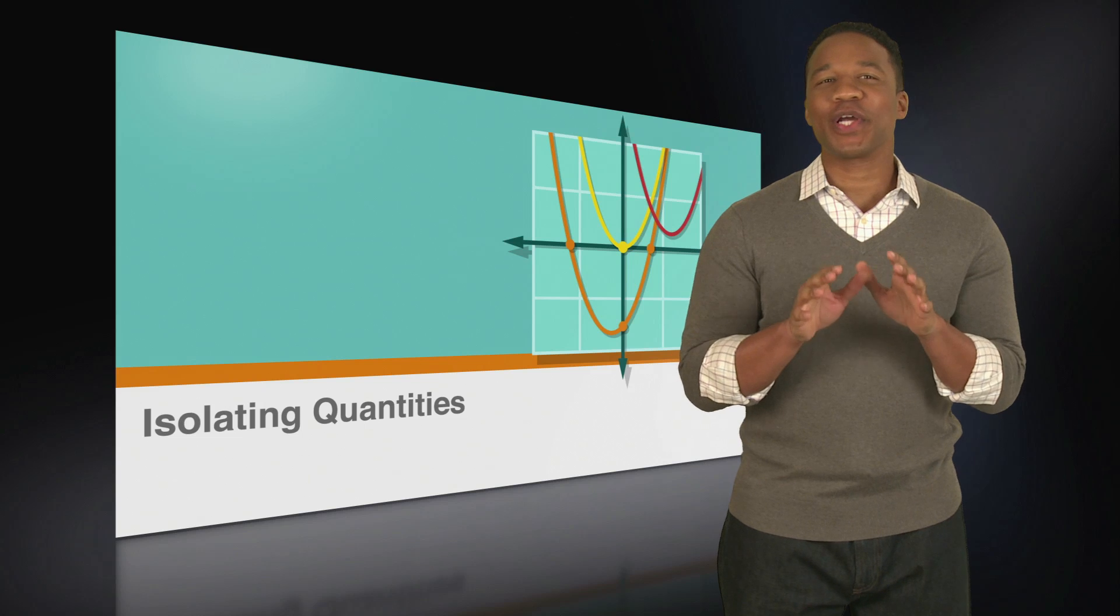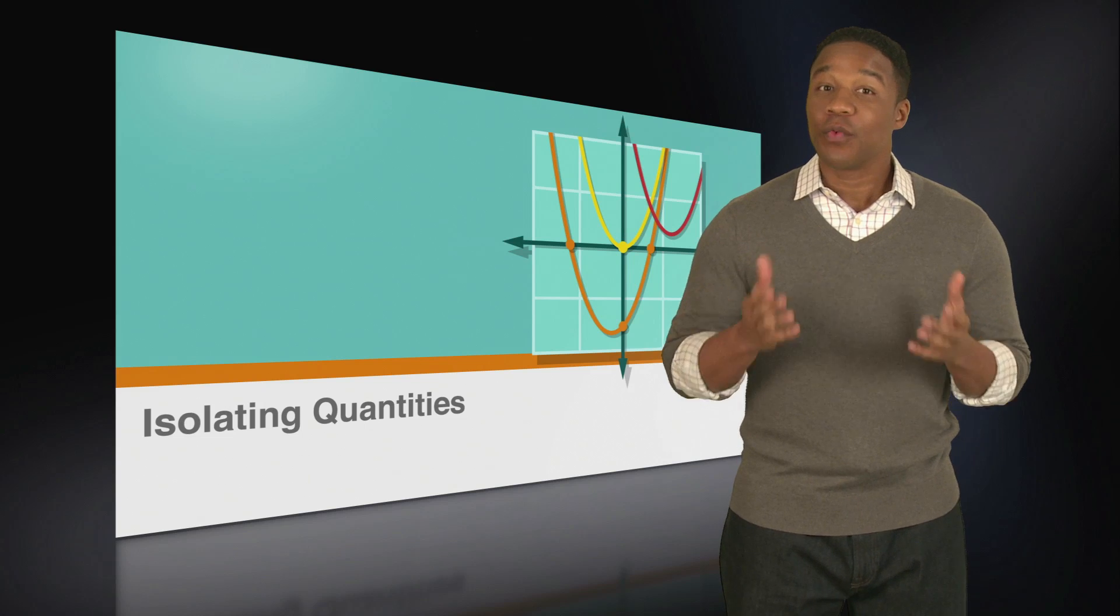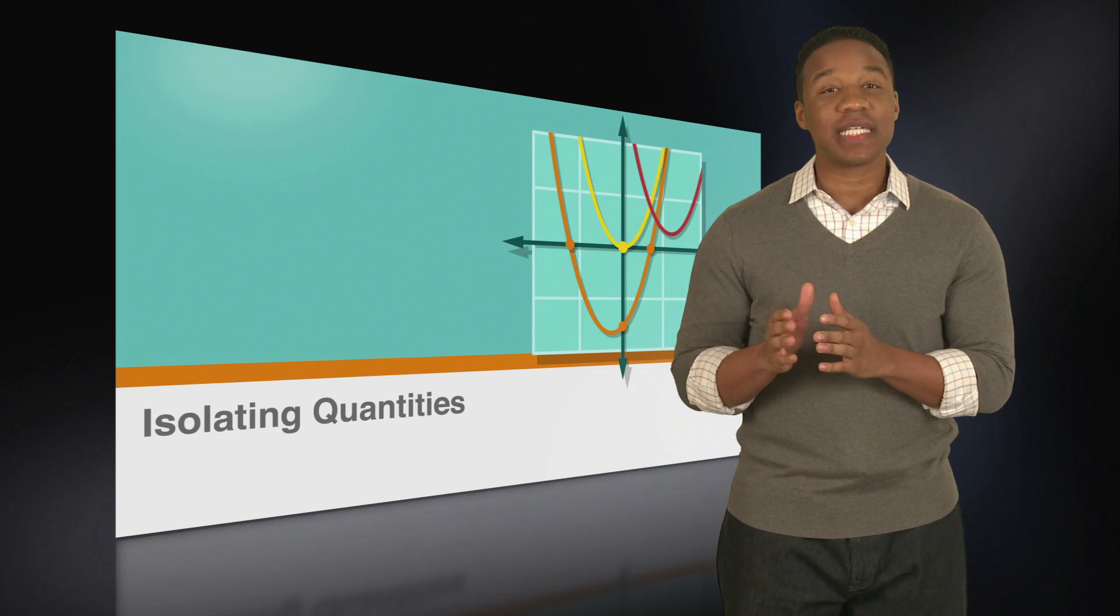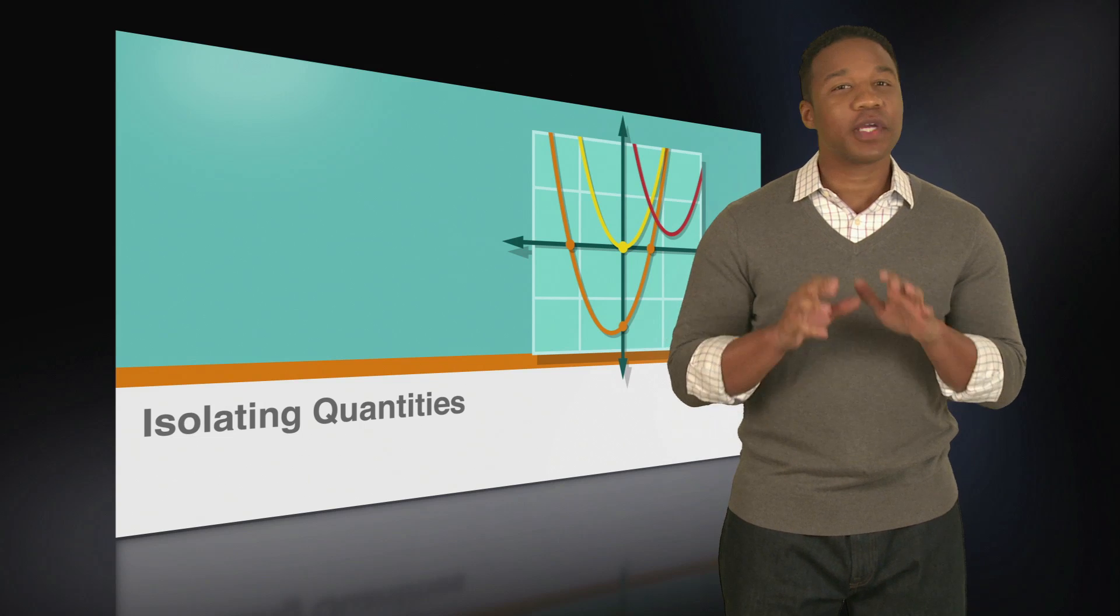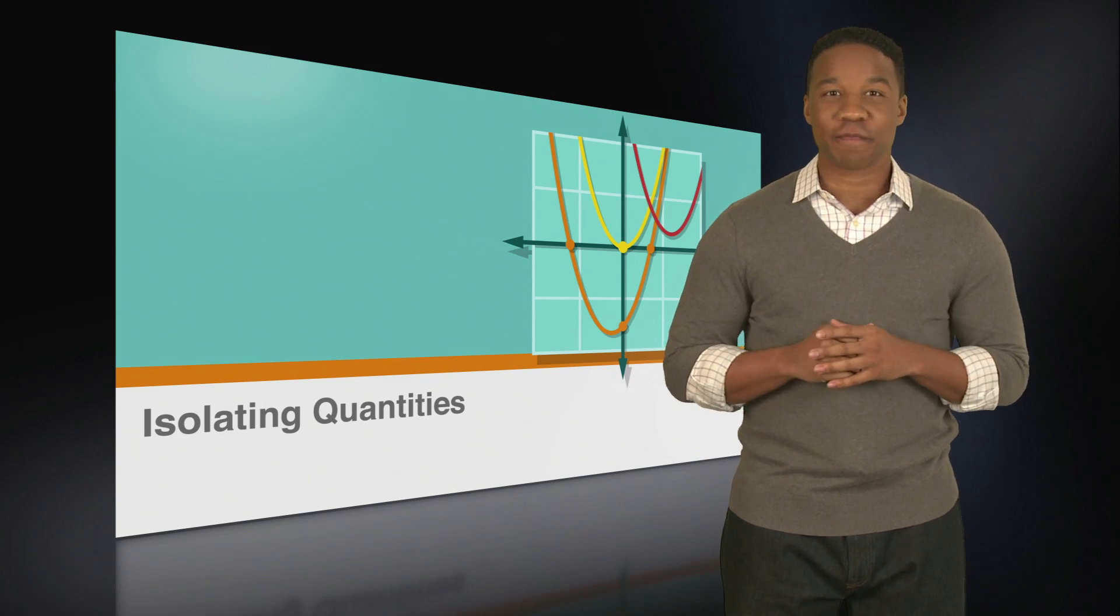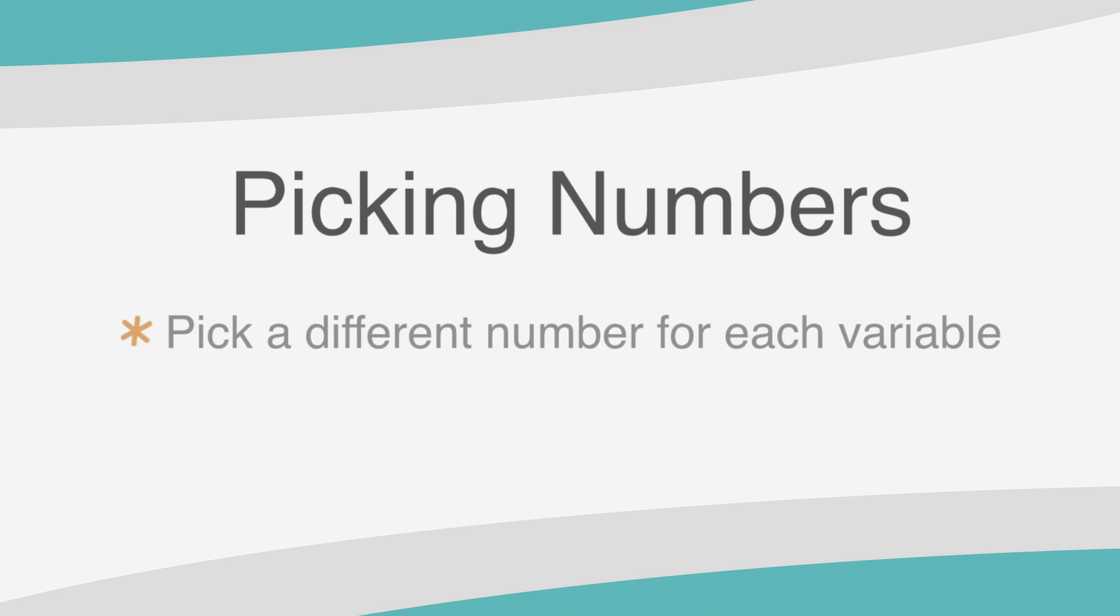Let's start by going over the picking numbers approach. As we've learned, whenever you have variables in a question and in your answer choices, you can pick numbers to replace them with. There are just a couple of rules that are especially important to follow when you have multiple variables: always pick a different number for each variable and be sure to write everything down. Let's put this to practice.